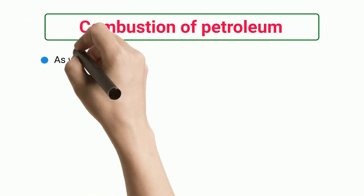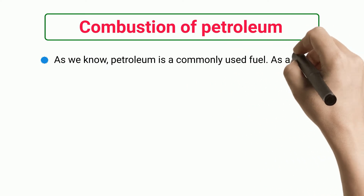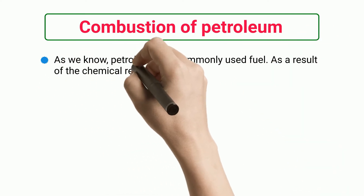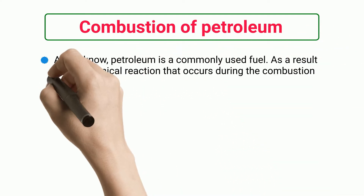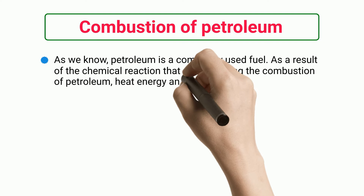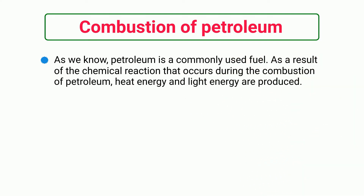Combustion of Petroleum. As we know, petroleum is a commonly used fuel. As a result of the chemical reaction that occurs during the combustion of petroleum, heat energy and light energy are produced.